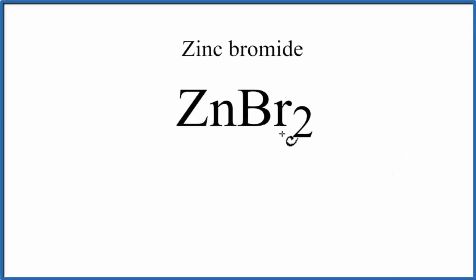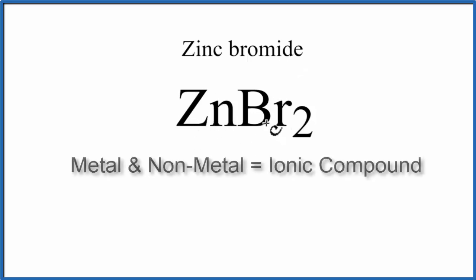In this video, we'll write the Lewis structure for ZnBr2, zinc bromide. Zinc is a metal, bromine's a nonmetal, so we have a metal and a nonmetal — we have an ionic compound.